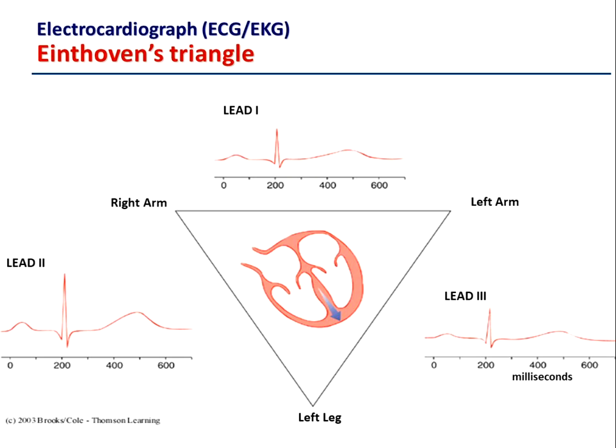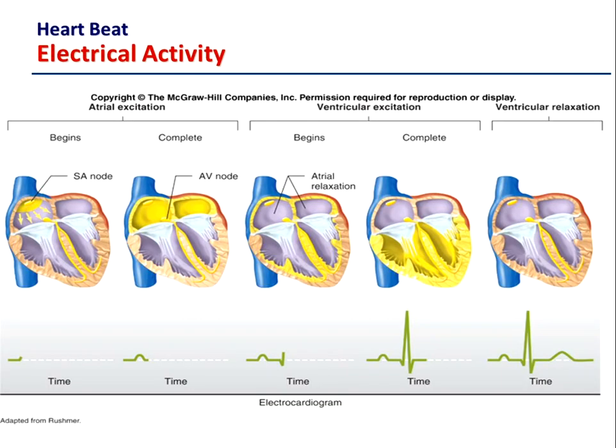Once we set up the participant, as will be shown in the next video, what we're looking at in terms of our P, QRS, and T waves is effectively the electrical activity as it spreads through the heart. The signal — an action potential — is generated at the SA node, the sinoatrial node, the pacemaker of the heart, and that innervates the atria first. So in a normal sinus rhythm, conducted through the sinoatrial node, we should have a P wave, and that P wave represents atrial depolarization.